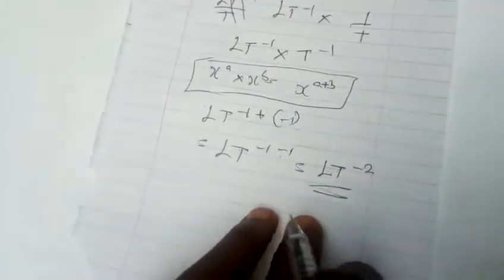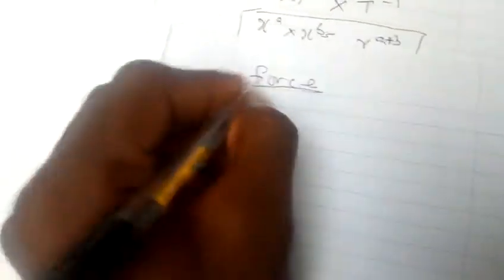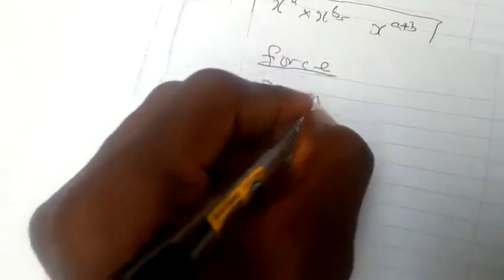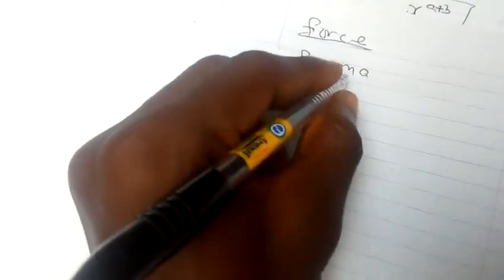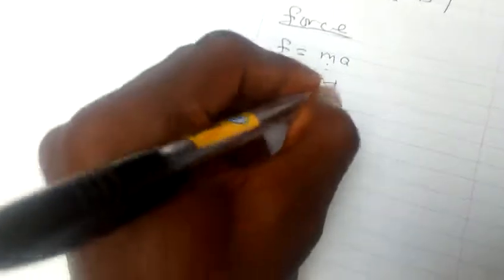Next, let's look at force. Force is equal to mass times acceleration. Force equals M times acceleration, which we've already gotten as L T minus two. Multiplying this, we have M L T minus two as the dimension for force.